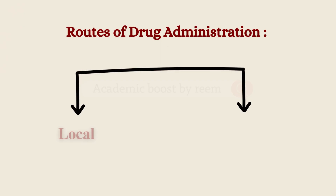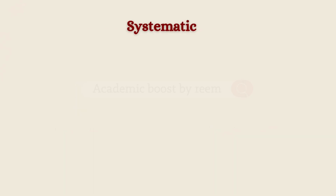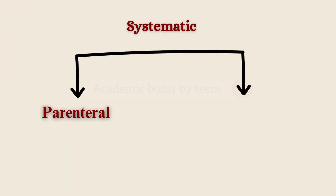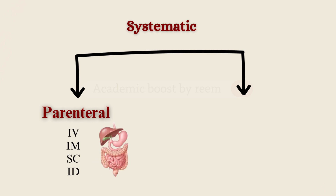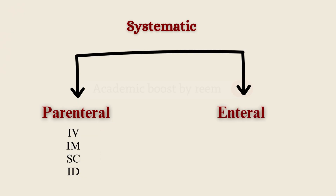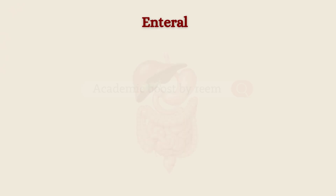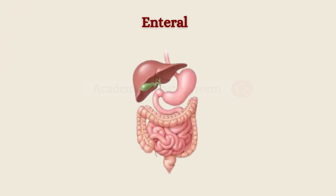Starting with the systematic routes, they are further divided into parenteral routes — including the four main types of injections where the drug bypasses the GI tract entirely — or enteral, in which the drug passes through the gastrointestinal tract.